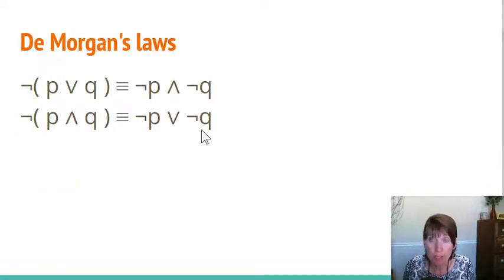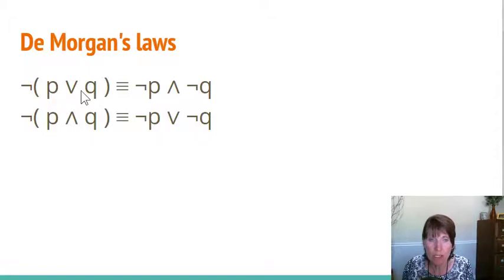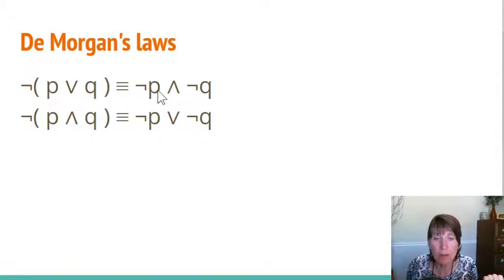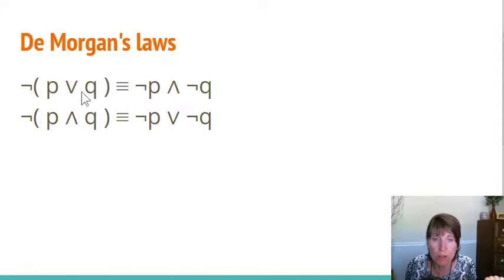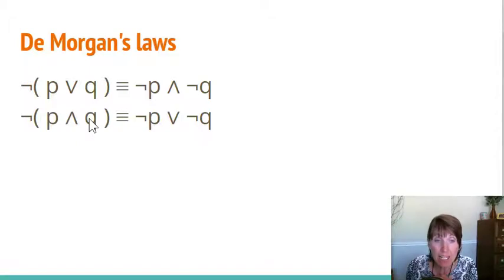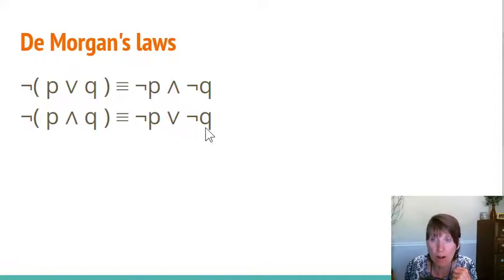De Morgan's laws: if you take P OR Q and negate the whole thing, what you end up with is NOT P AND NOT Q. These two forms are logically equivalent, so you can write it either way and go whichever direction you want. Similarly, if you take NOT (P AND Q), you end up with NOT P OR NOT Q. Those are De Morgan's laws.